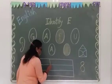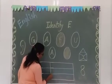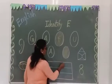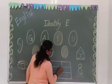E for Ear, E for Elephant, E for Eagle, E for Egg, and E for number 8, E for Egg.